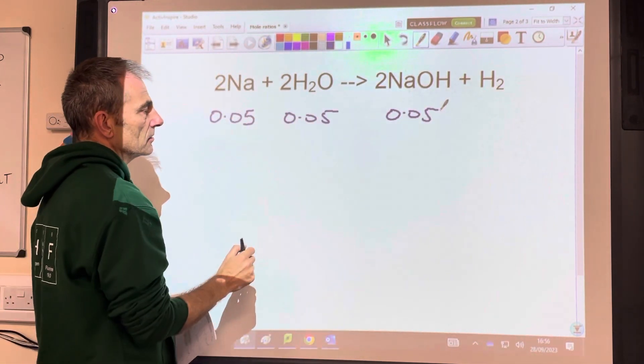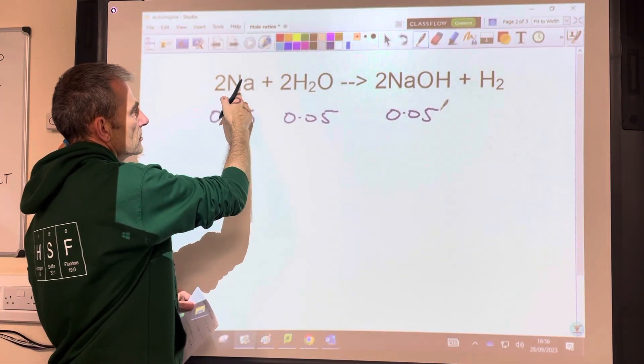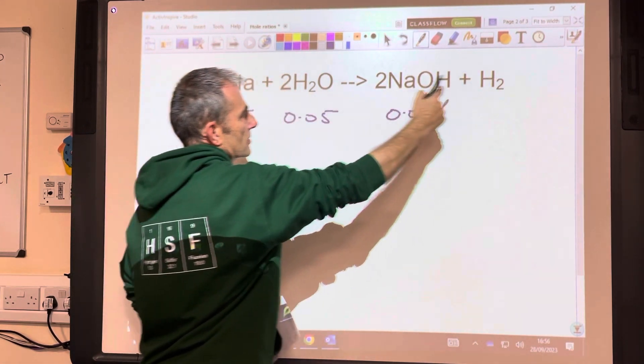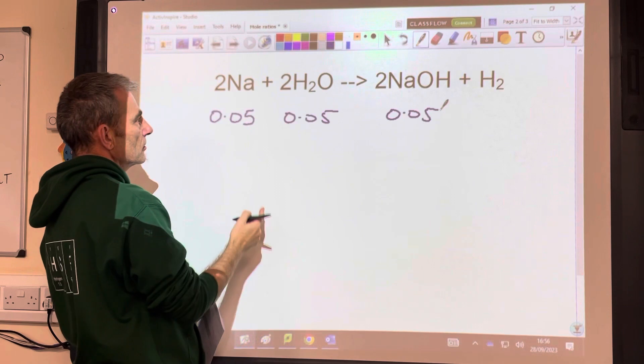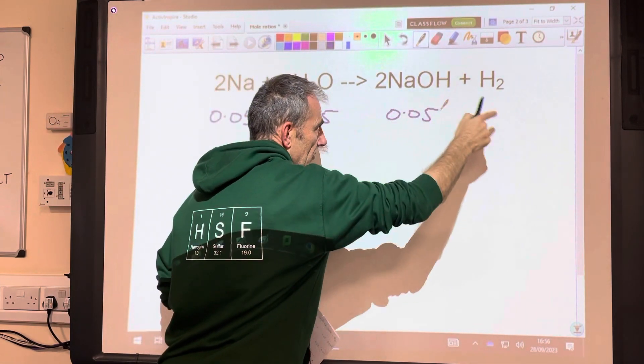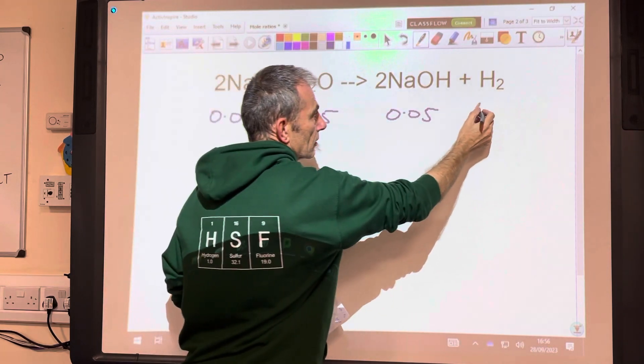The hydrogen, well, if we look at this ratio, that to that. So every 2 moles of sodium makes 1 mole of hydrogen. So 0.05 moles of sodium would make half as many moles of hydrogen. So that's 0.025.